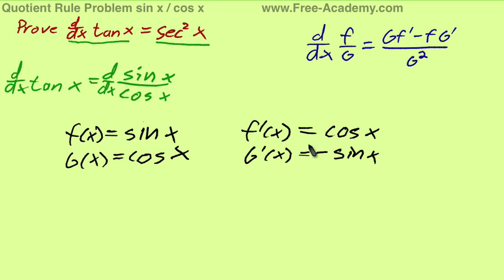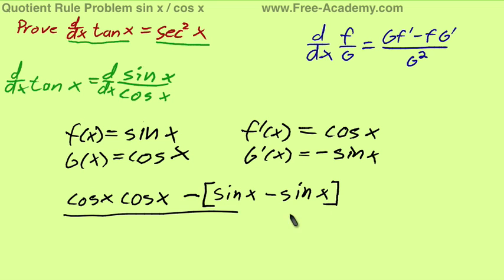So we got our two derivatives there, and we have our formula, so let's plug and chug. g of x is cosine of x, f prime of x is cosine of x. This is going to be minus, we're going to be subtracting a group, so I'll put in those brackets just to be really careful. f of x is sine of x, g prime of x is negative sine of x. And this is all going to be over g of x squared, so cosine squared x.